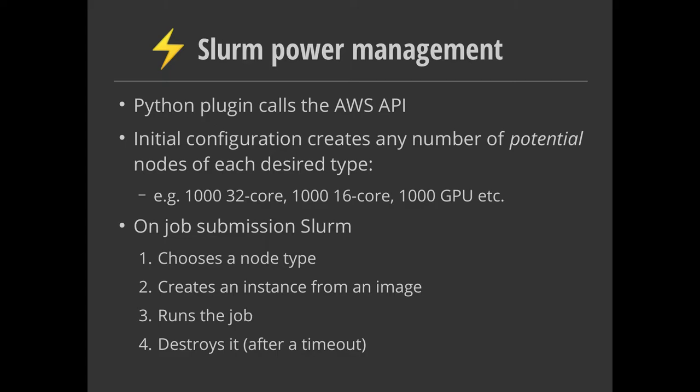You can specify the architecture — if you want an ARM architecture, you ask for that, and it's going to assign that work to a Graviton processor node. It then starts an instance, creates one from scratch based on the compute image created earlier, starts the job running on that node, and once the job's finished, destroys it. We have a little timeout before it actually destroys it, in case you have another job coming in the queue or submit a follow-on job a few minutes afterwards, so you don't have to pay for that startup time twice.